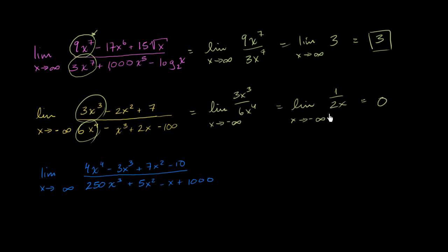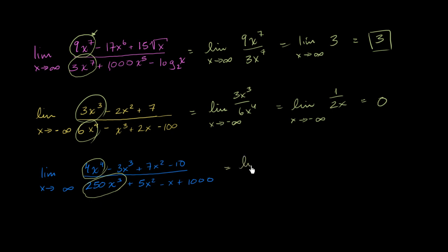I encourage you to graph it or try it out with numbers to verify that for yourself. The key realization here is to simplify the problem by just thinking about which terms are going to dominate the rest. Now let's think about this next one: what is the limit of this crazy function as x approaches infinity? In the numerator it's 4x to the 4th; in the denominator it's 250x to the 3rd — these are the highest degree terms.